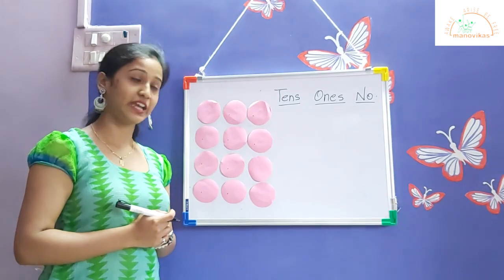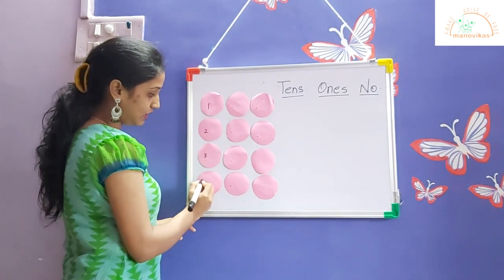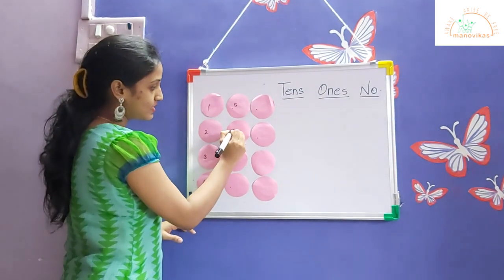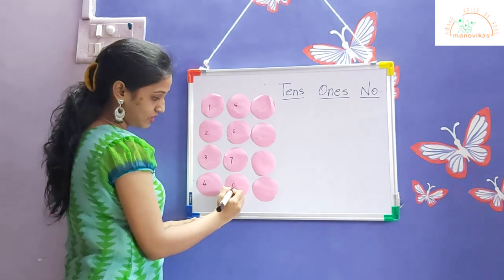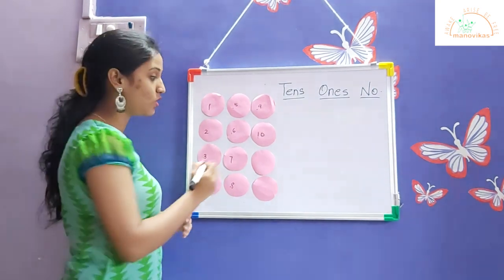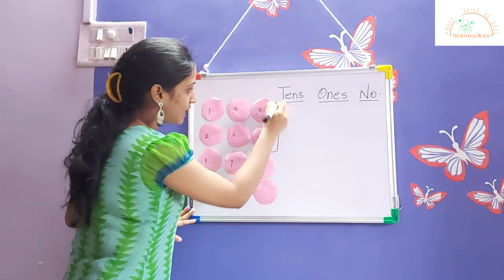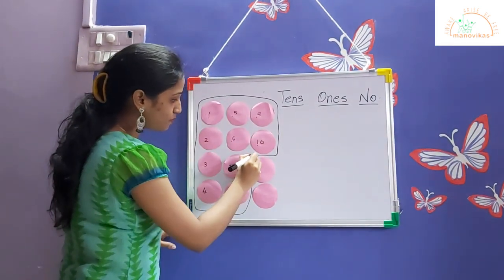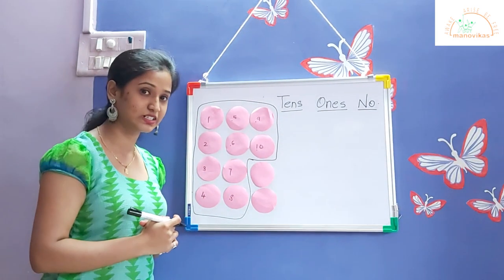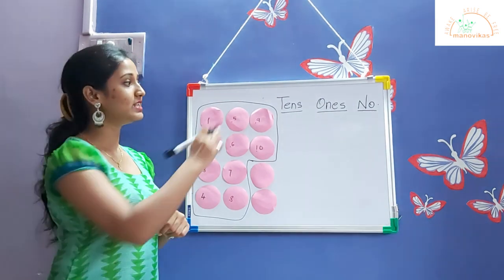Let us make a group of ten and write the number. One, two, three, four, five, six, seven, eight, nine, ten. We got one group of ten circles, so we will draw a line and make it into one group. One bundle of ten circles makes one ten, so we write it in the tens column.